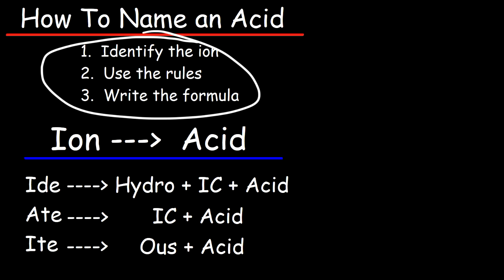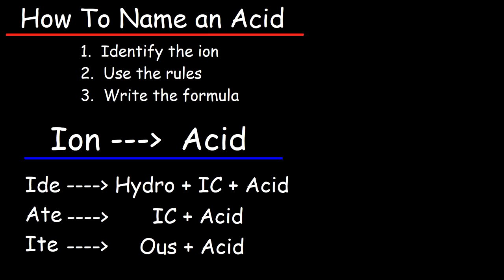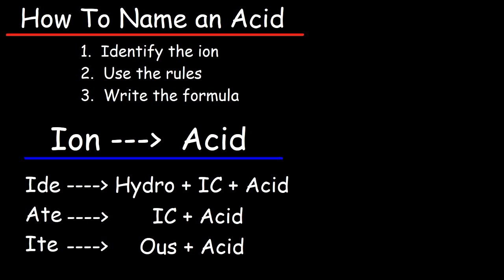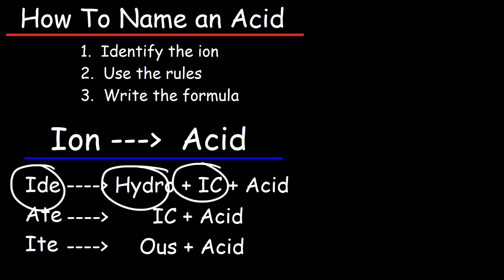Hopefully you've memorized those ions. If not, I recommend that you go to Google Images and type in 'polyatomic ion sheet' or something like that. The second thing you want to do is use the rules listed below. If you have an ion with the suffix '-ide', you're going to replace that with the prefix 'hydro' plus the suffix '-ic', and then the word 'acid'.